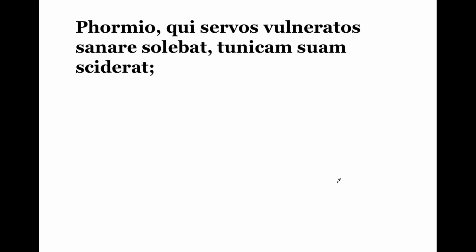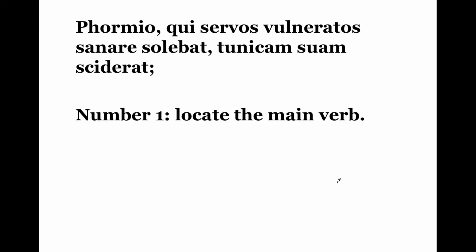When you're translating, just make sure you can stop at any period, colon, or semi-colon. What follows will be another complete sentence. Sometimes something might be presented to you and you think, wow, that's a long sentence — it's not really a sentence. So we're going to translate just up to here. The number one thing we want to do is look for the main verb. We're going to sometimes have clauses. This 'qui' right here is actually a clause inside the sentence telling us more about Formio, but the main sentence is everything outside that clause.